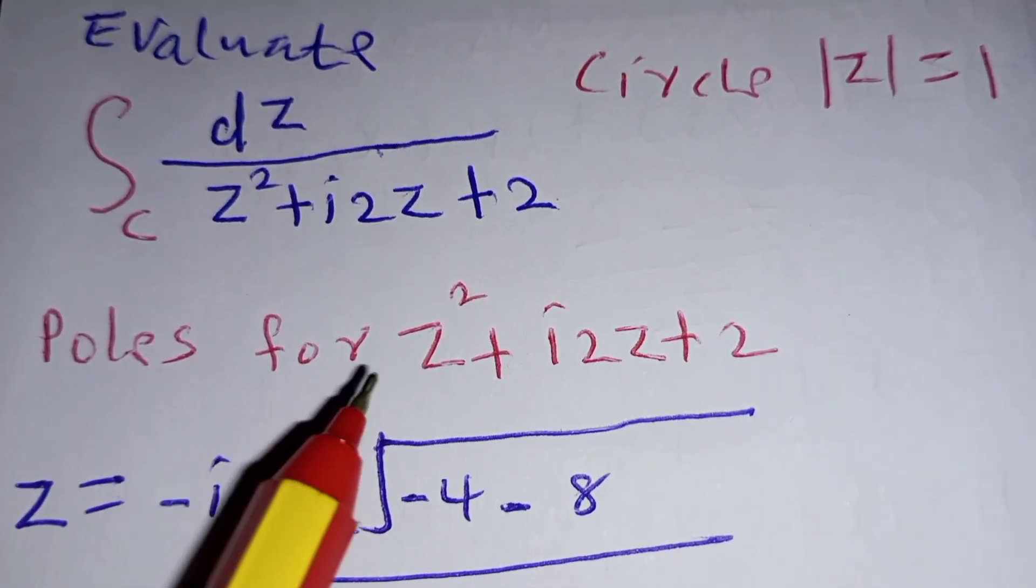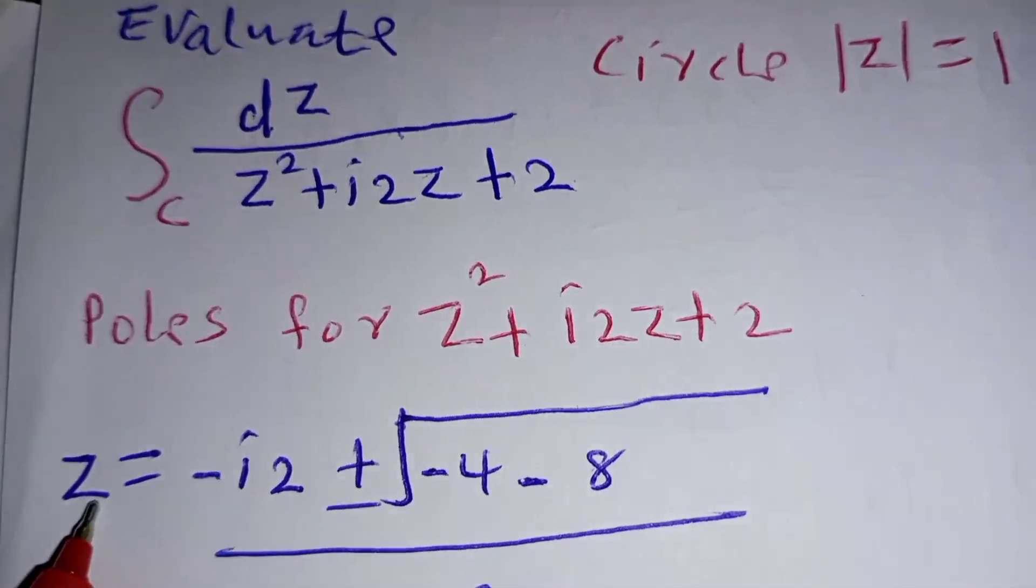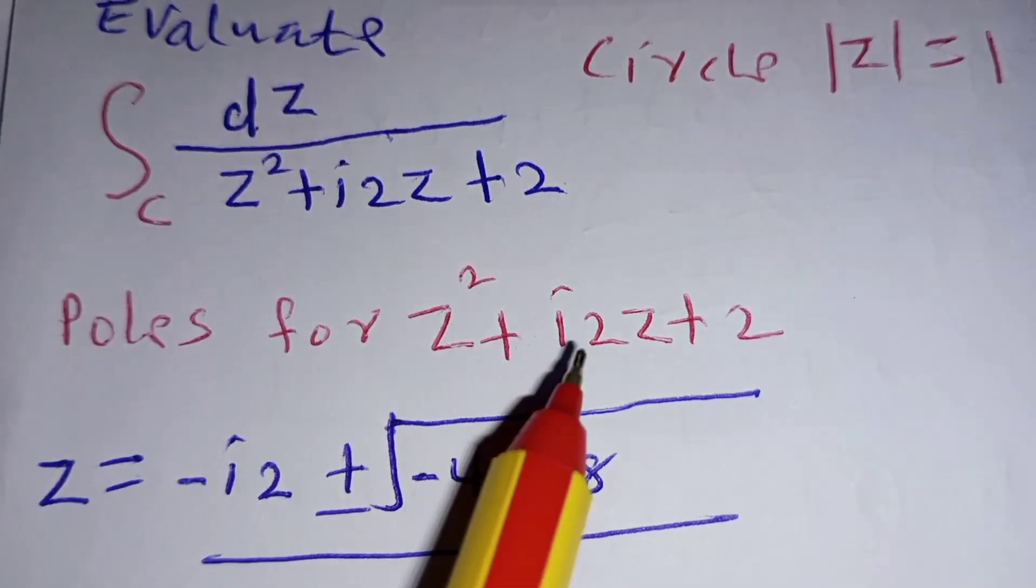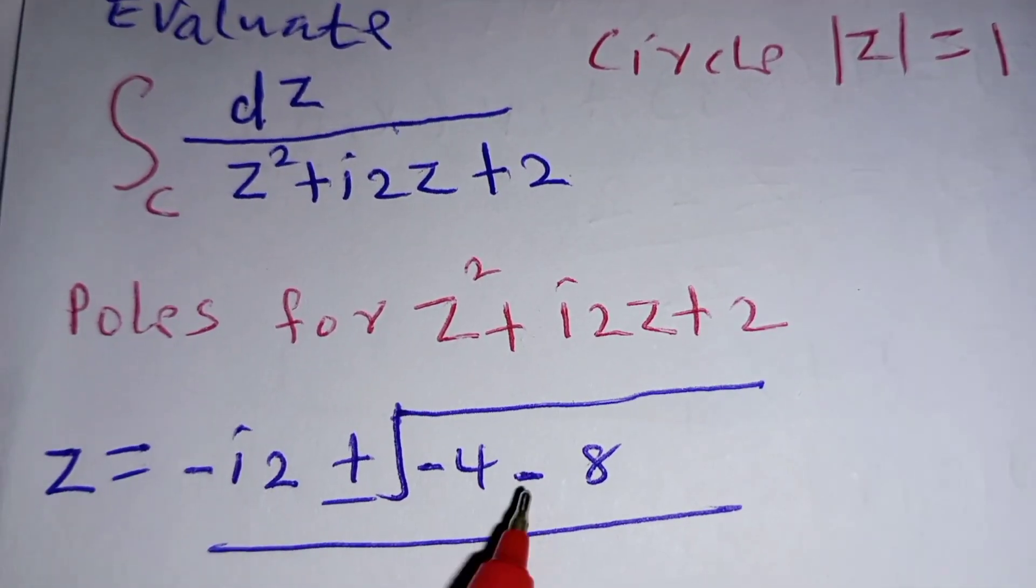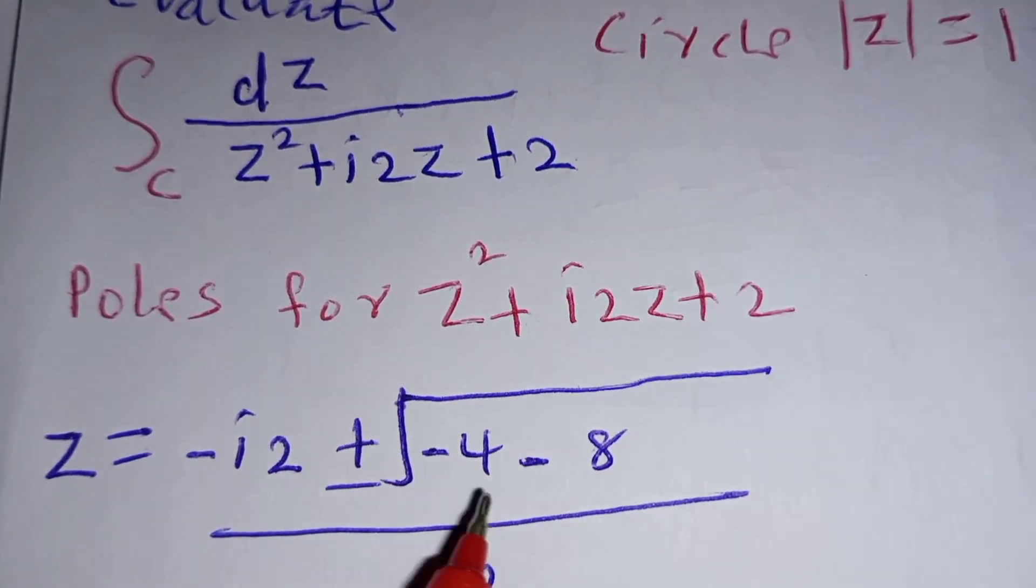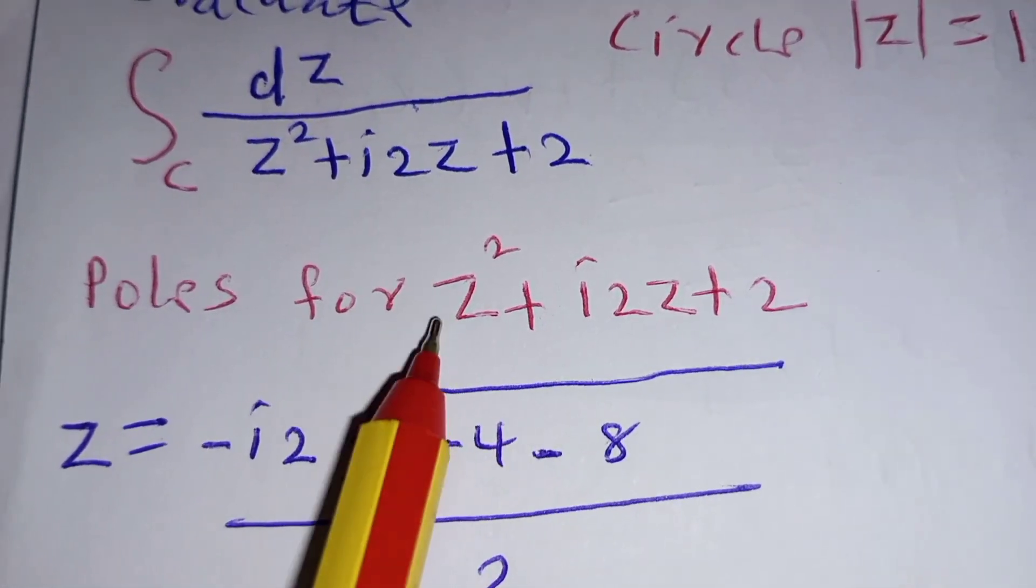First of all, you can get the poles for z squared plus i2z plus 2. We are going to do that by using the quadratic formula, where our b is i2 as shown here. When you square i it will be negative, so 2 squared will be 4. That is where we have negative 4 minus 4ac.